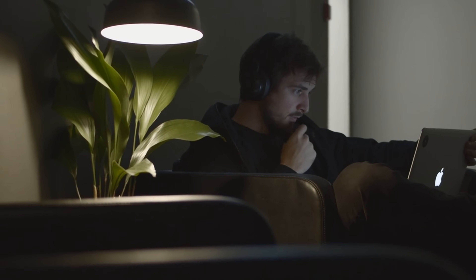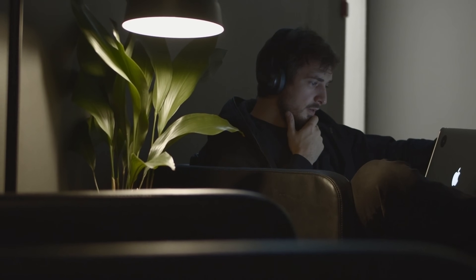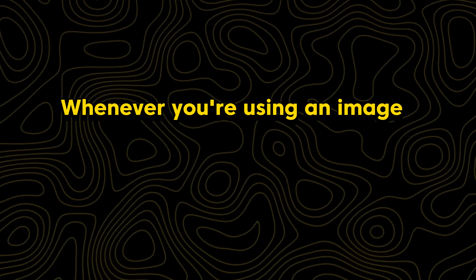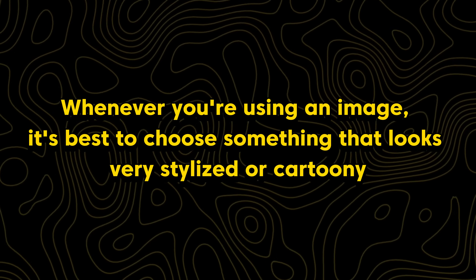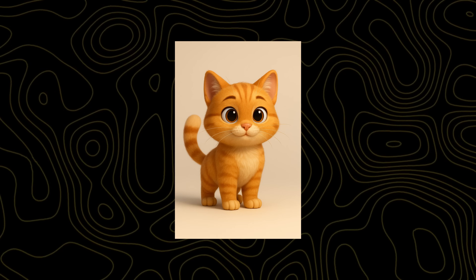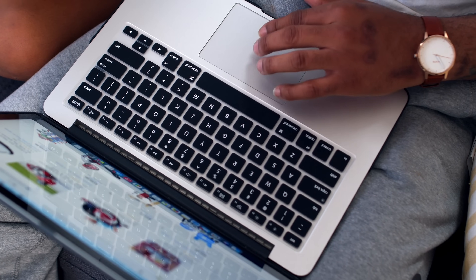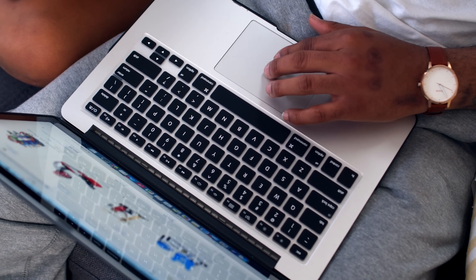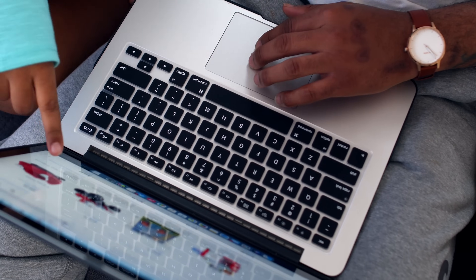Before you upload an image, here's something important to keep in mind. Whenever you're using an image, it's best to choose something that looks very stylized or cartoony, or even something that appears sculpted in 3D, like a toy. That's because the model is fine-tuned to deliver more stylized results, so to get the best possible results, always start by providing the AI with a stylized image.